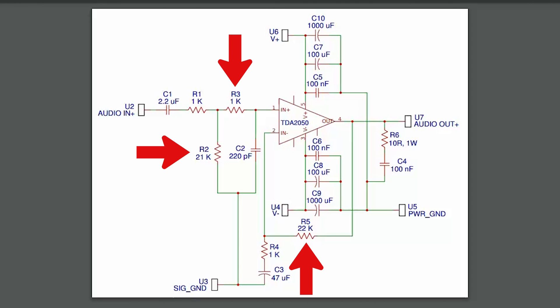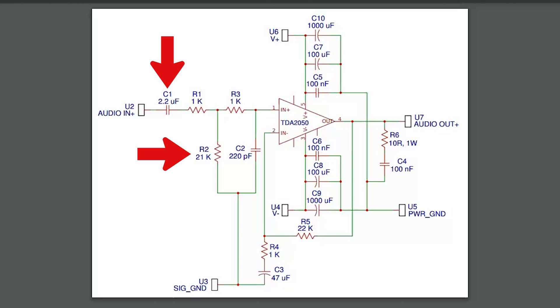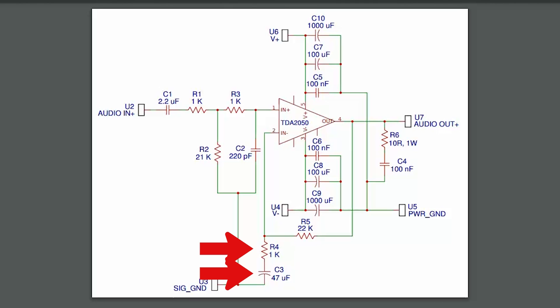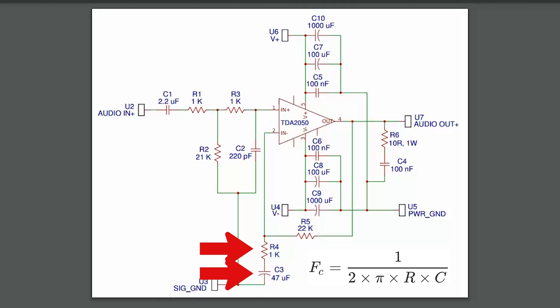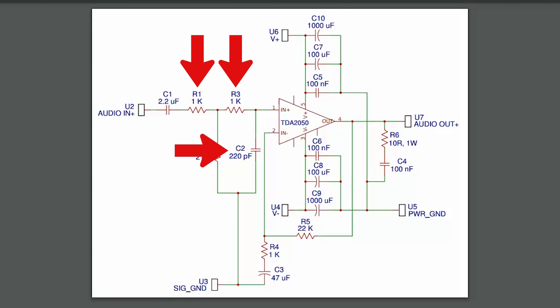R2 plus R3 equals 22 kilo ohms, and R5 is 22 kilo ohms, so the current should be balanced. The amp has several resistor-capacitor filters that set the upper and lower frequencies of the amplifier's bandwidth. One filter is here at the input with C1 and R2 — this is a high-pass filter. The frequency at which the filter starts to work is called the cutoff frequency, or Fc. Fc can be calculated with this formula, with resistances in ohms and capacitances in farads. Another high-pass filter is located here in the feedback loop with R4 and C3. The third filter is a low-pass filter at the input, formed by R1, R3, and C2. This filter sets the upper frequency of the amp's bandwidth, and also filters any radio interference picked up by the audio input cables.